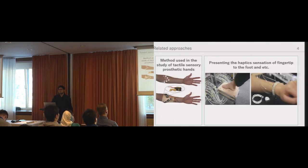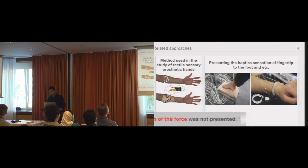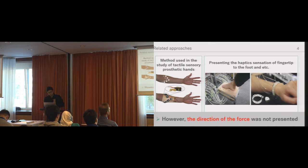This is a common method used in the study of tactile neuroprosthetic hands and there have been many attempts to place vibrators on the shoulder or on the arm to present some haptic cues. However, the direction of the force was not presented in most attempts. Therefore, our aim is to present the haptic sensation of a fingertip including the direction of the force to the forearm.